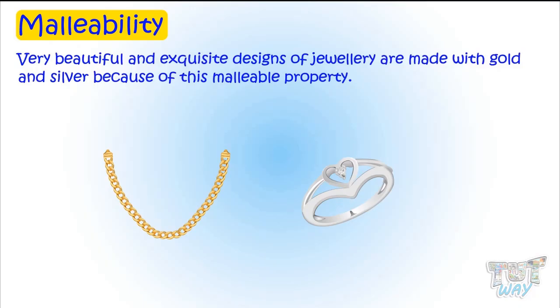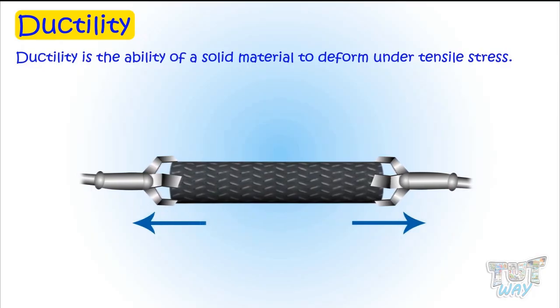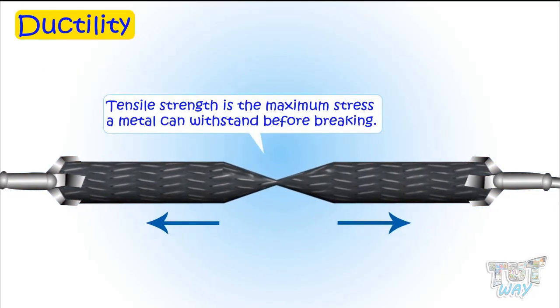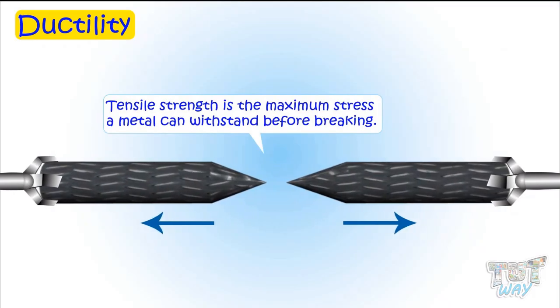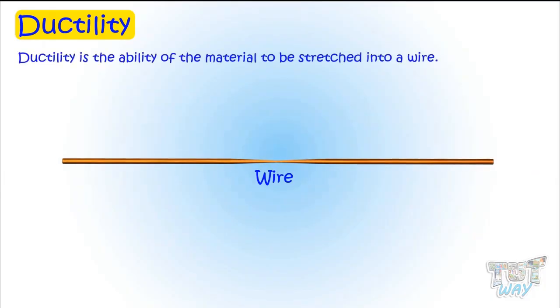Now let's have a look at another property which is ductility of metals. This property is known as ductile. Ductility is a solid material's ability to deform under tensile strength. Tensile strength is the maximum stress a metal can withstand before breaking. More specifically, ductility is this material's ability to be stretched into a wire.